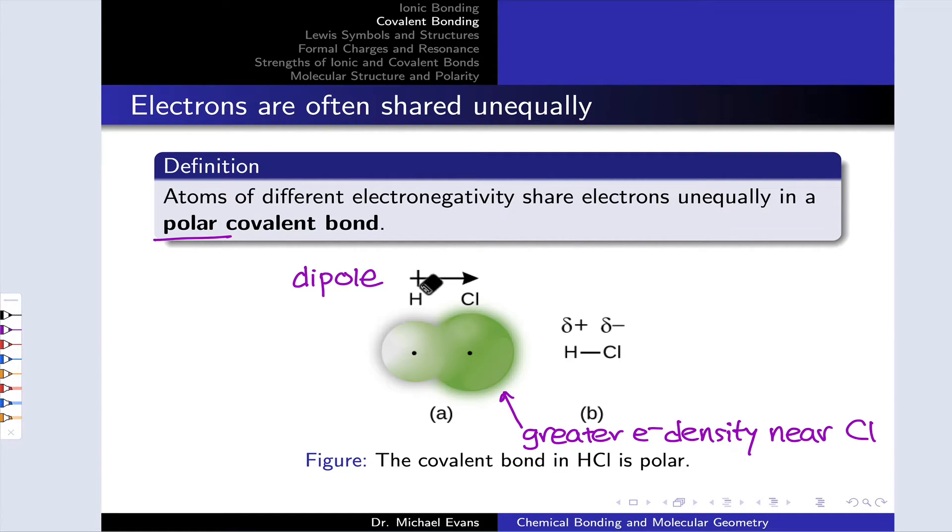So this dipole vector in black represents where the partial positive charge is located, where you see that cross at the start of the arrow, or the tail of the arrow, rather, and where the negative charge is located, where you see the head of the arrow.